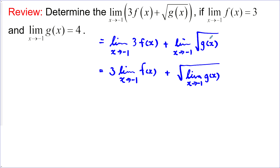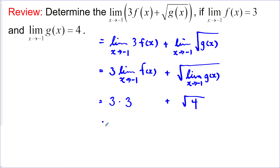Now we can see where we can use the given information. So 3 times the limit of f(x) as x approaches negative 1 is 3. And the limit of g(x) as x approaches negative 1 is 4. So we replace that with the given information, and now we get 9 plus 2, and that would be 11.